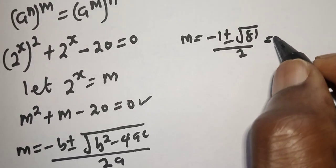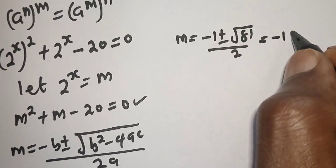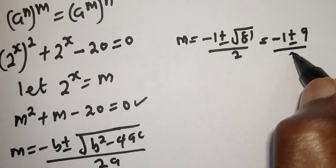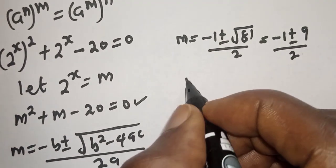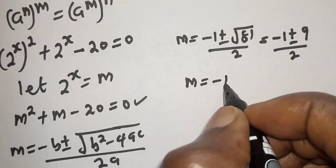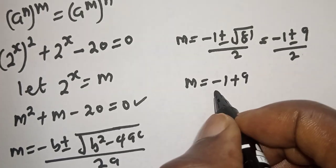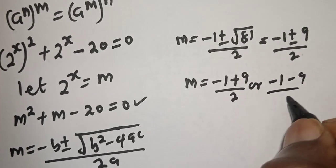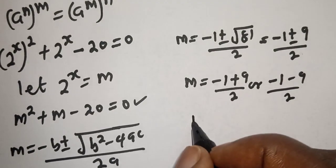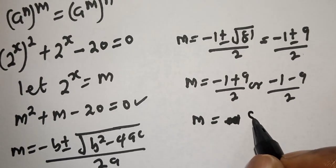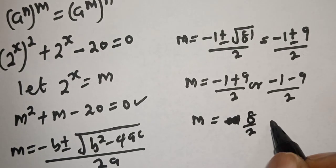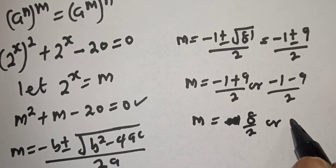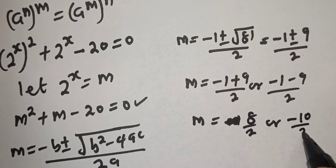This is equal to minus 1 plus or minus 9 over 2. Then m is equal to minus 1 plus 9 over 2, or minus 1 minus 9 over 2, which gives m equal to 8 over 2, or minus 10 over 2. So m is equal to 4 or minus 5.